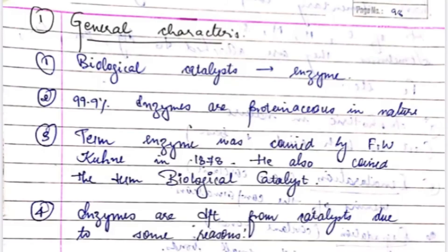Enzymes are basically biological catalysts, and 99.9% of them are proteinaceous in nature. The term enzyme was coined by F.W. Kuhne in 1878; he also coined the term biological catalyst.